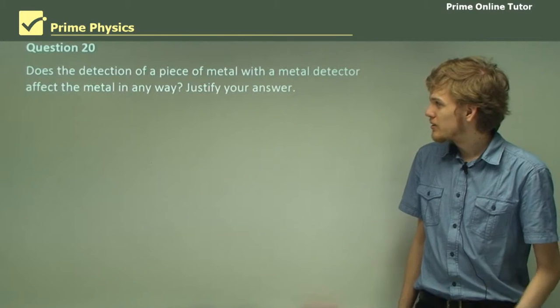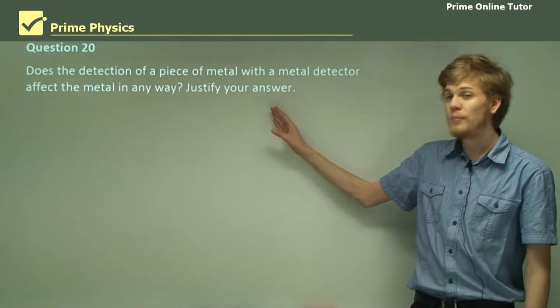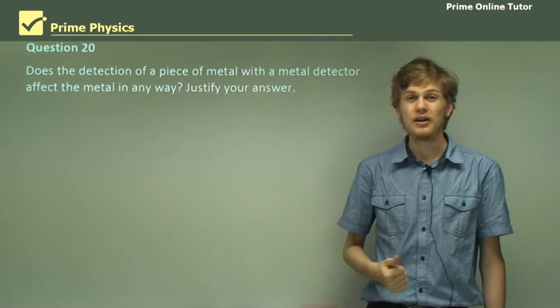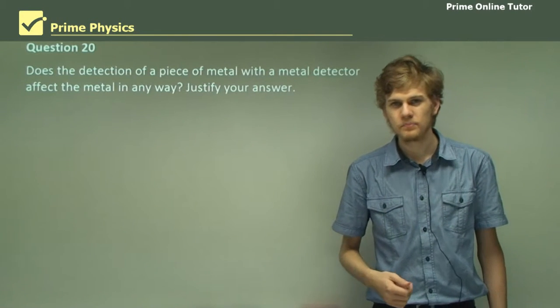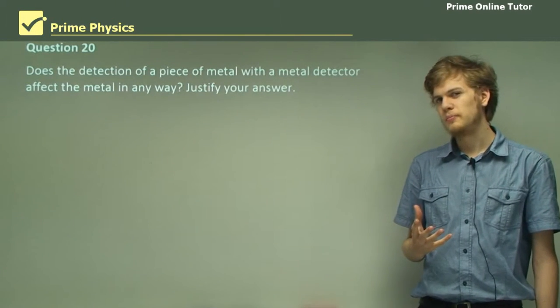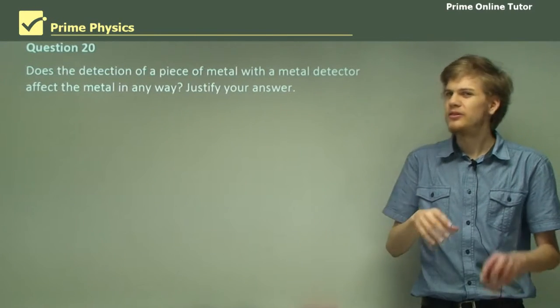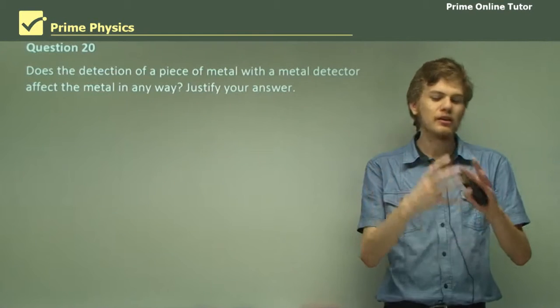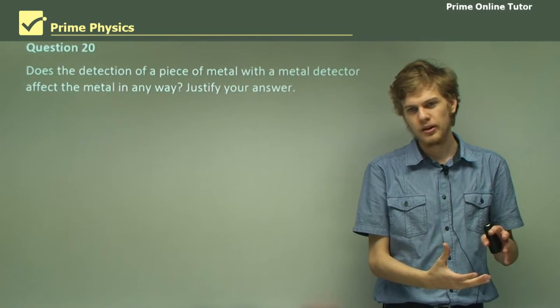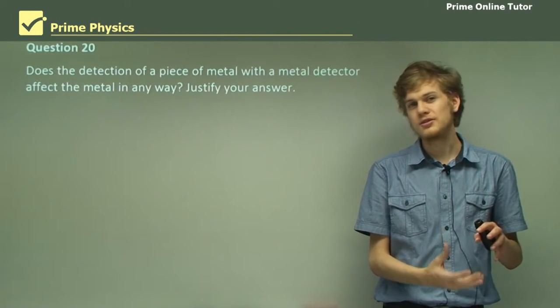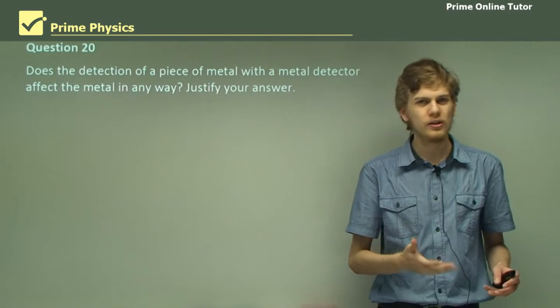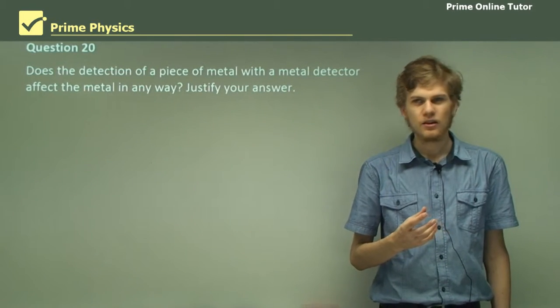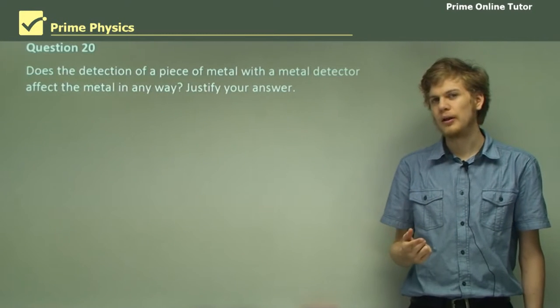Question 20. Does the detection of a piece of metal with a metal detector affect the metal in any way? Justify your answer. Let's think about this. What actually happens to the metal when we detect it? There's a changing magnetic field that goes through it, but that probably won't magnetize it if it's flipping back and forth quickly enough. It will, however, produce eddy currents, so there is electricity flowing through the metal.